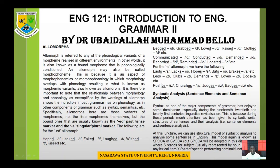The last pronunciation variant of '-s' is /ɪz/, present in words like 'pushes,' 'churches,' 'judges,' 'barges,' and similar words. The same '-s' that we know is there, but the phonological conditioning determines its pronunciation. This is what we call an allomorph.